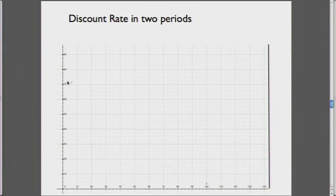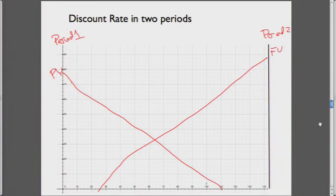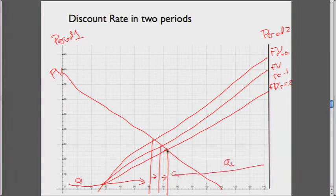This is the two-period model, so we need present value between the two periods. We have a demand curve in period 1 and period 2. Here's our present value and here's our future value in period 2, discounted back to period 1. As we increase the discount rate, we consume more and more in period 1 and leave less and less for period 2. We're going to put both graphs into present value of period 1 by discounting the future value of period 2 by the interest rate, making those lines lower and lower.